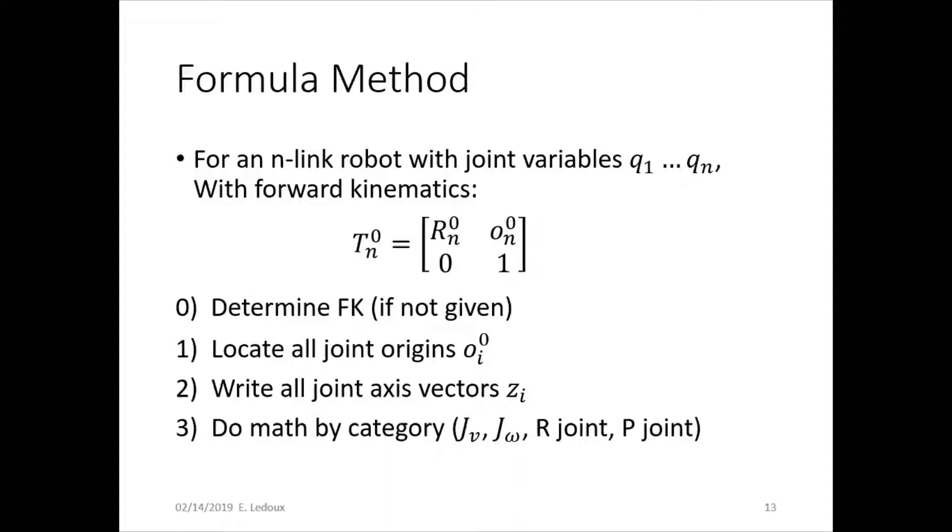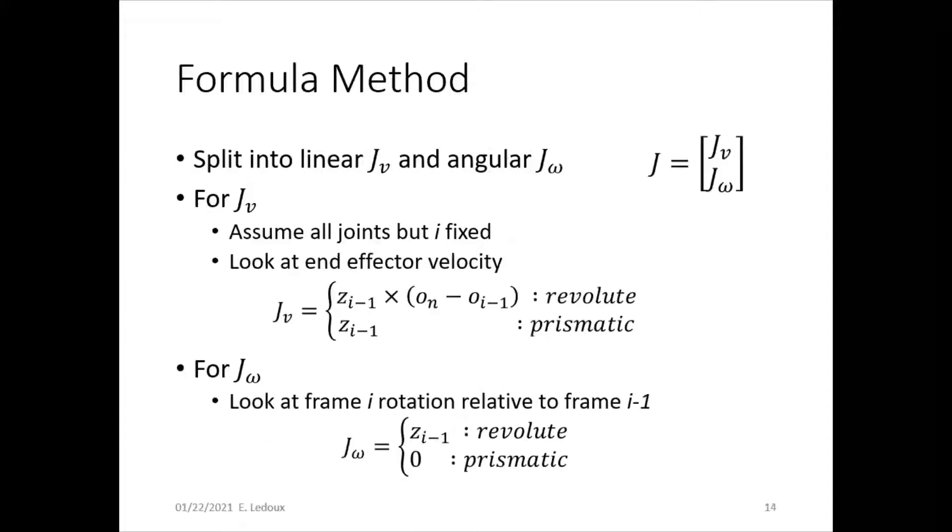Second step is write all the joint axis vectors z, and then do the math by category, getting the linear and angular parts of the Jacobian for revolute or prismatic joints. Those formulas are here.